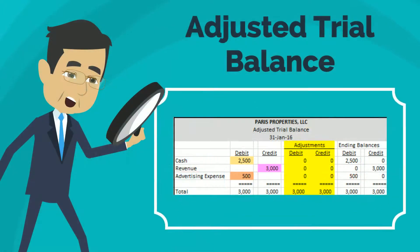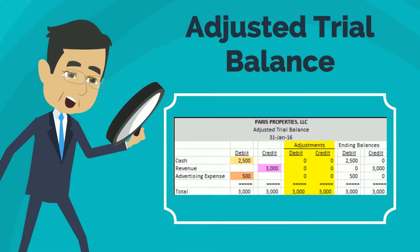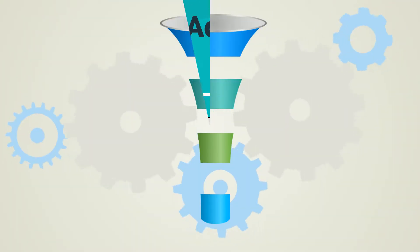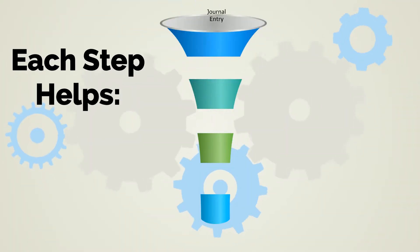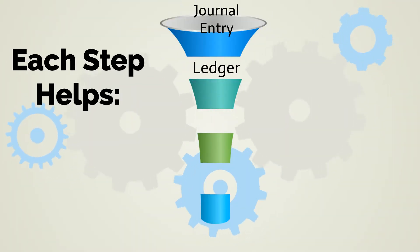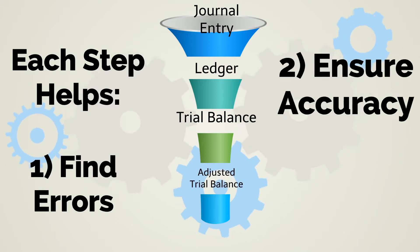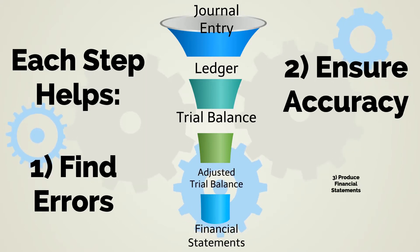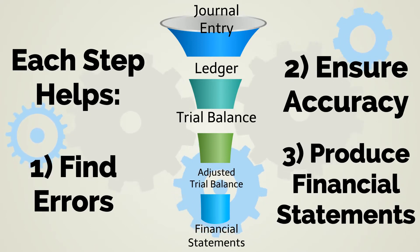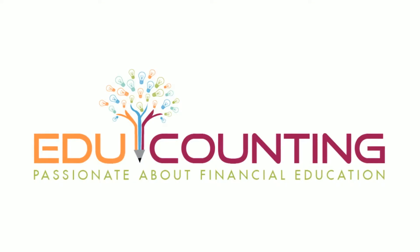The adjusted trial balance is what is produced after adjustments are made in order to follow the accounting rules — we'll cover this later. Each step has its role. Understanding the components helps with finding errors, ensuring accuracy, and producing great financial statements. Thanks for being here.